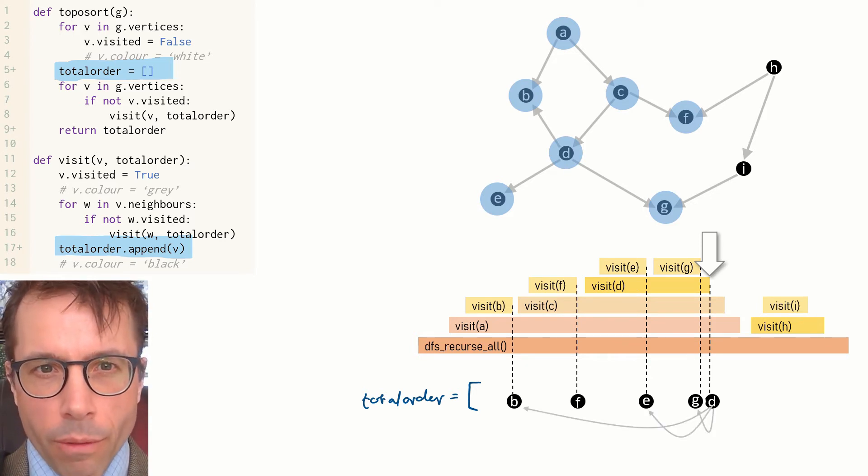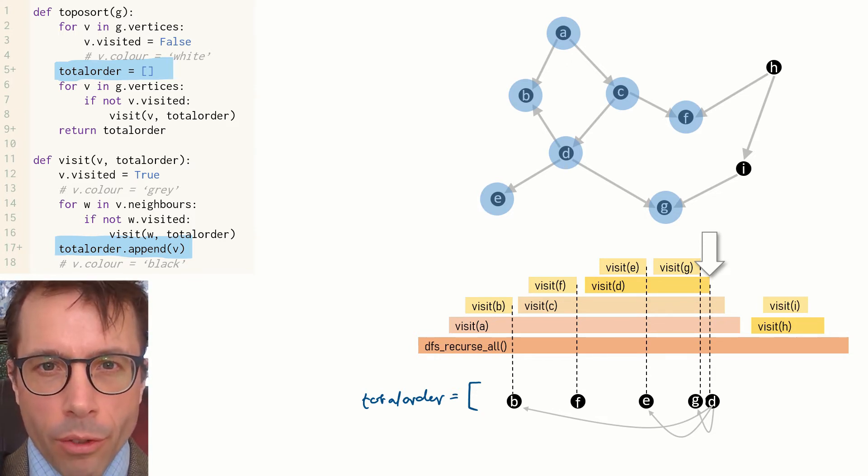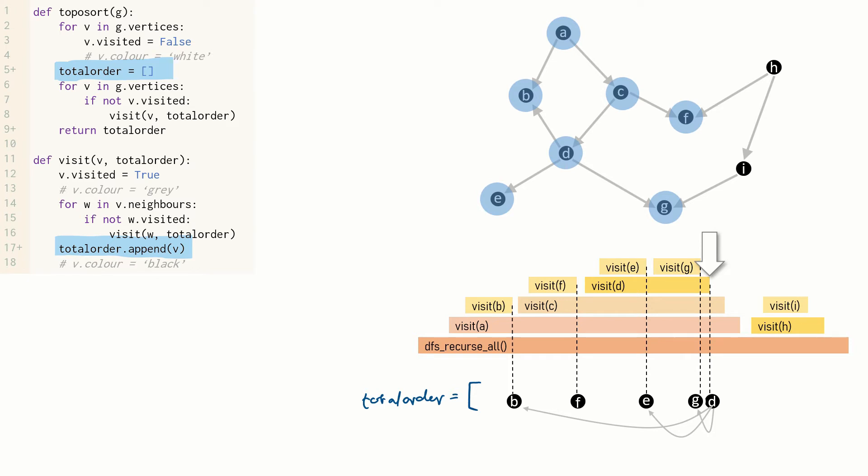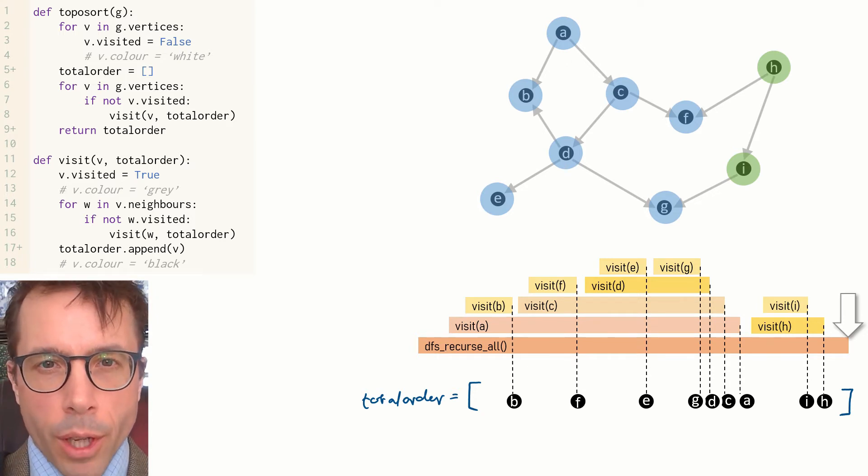Now at D, I'm going to draw on all of these outgoing edges. None of the other vertices we've recorded so far have had any outgoing edges, so I haven't needed to draw them in. But D does have edges - it points to B and E and G, and all of these edges point backwards to vertices that are already in the total order. And so on, and eventually we return from dfs_recurse_all.